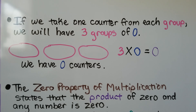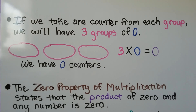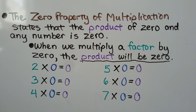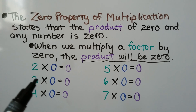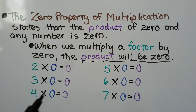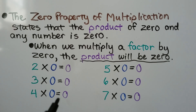We have 0 counters. 3 times 0 is equal to 0. The zero property of multiplication states that the product of 0 and any number is 0. When we multiply a factor by 0, the product will be 0. 2 times 0 is equal to 0, 3 times 0, 4 times 0 — it doesn't matter how big or small the number is. If we multiply it by 0, the product will be 0.